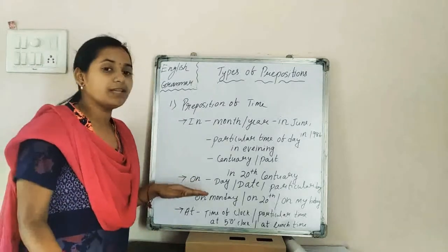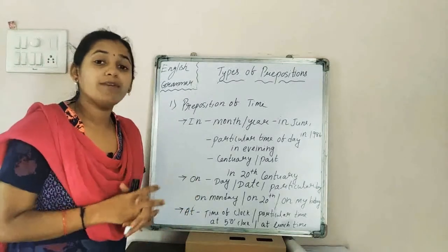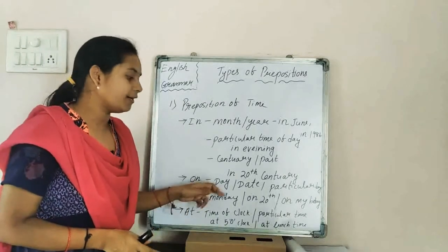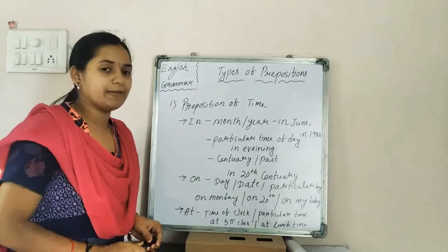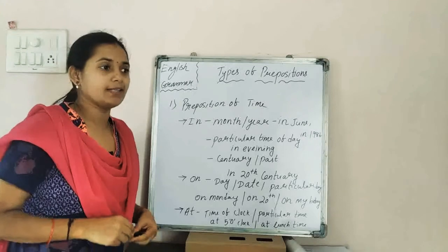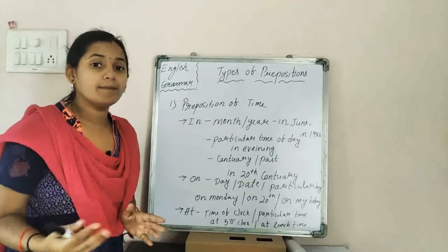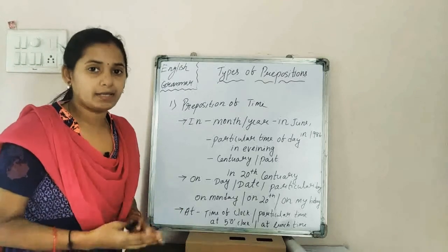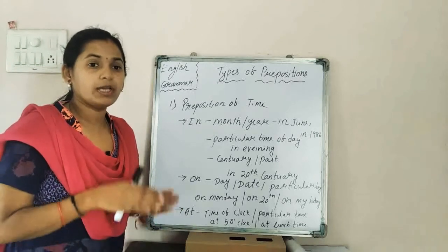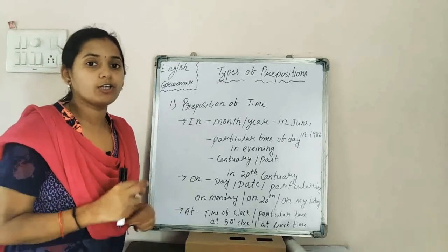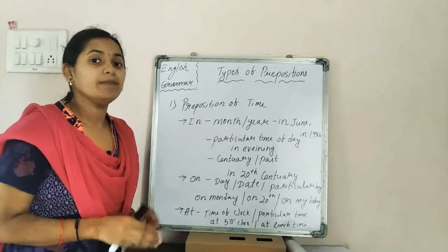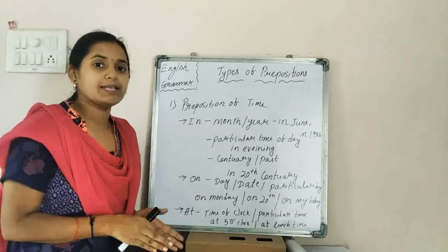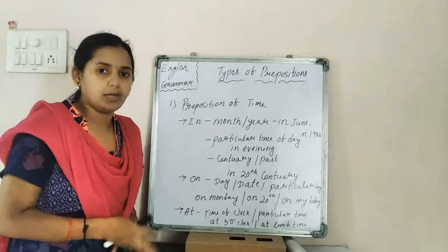Now moving to the second preposition of time, which is 'on.' We use 'on' when talking about a day — for example, on Sunday my neighbors are coming. Before Monday, Sunday, Tuesday, we use 'on.'